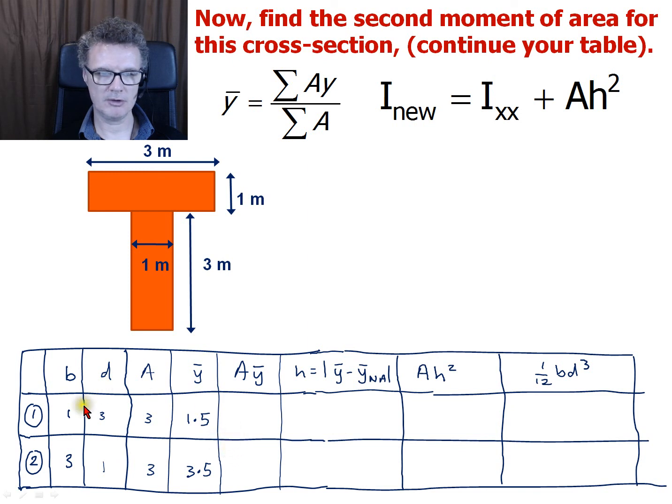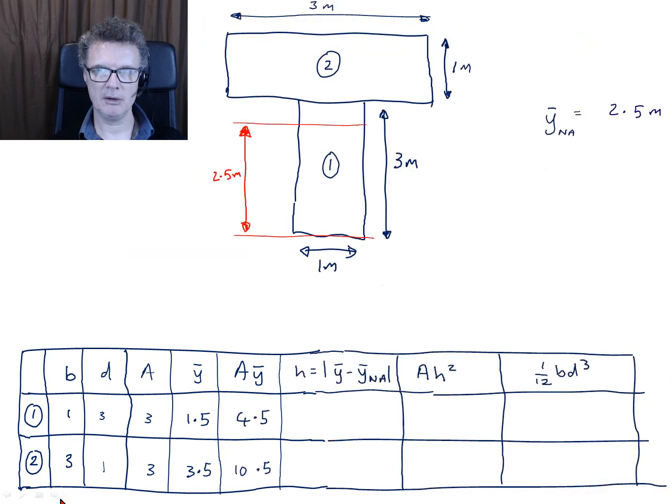Previously we had a table like that and we worked out the A*y values as well, so let's put them in. We've got the A*y values. Now pause the video and work out what your h's are, your A*h² values, and what your bd³/12 values are.